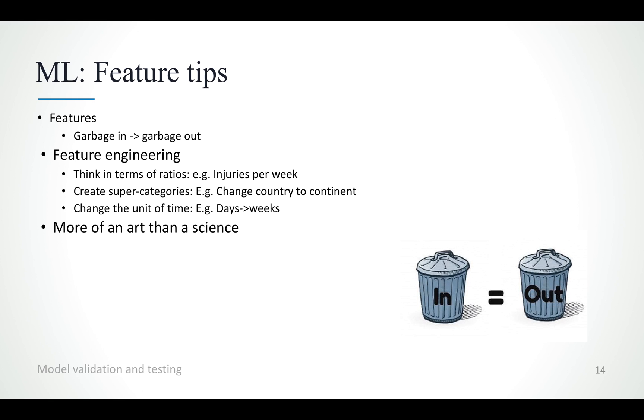So for example, it's useful sometimes to think in terms of ratios or to create new categorical variables from already existing ones by grouping many categories together. Or in some cases, it's useful to change the unit of time and make it more granular, let's say moving from weeks to days or vice versa.